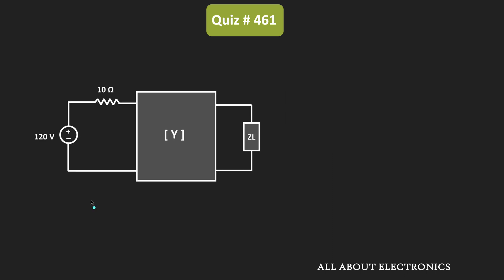We know that maximum power will get transferred to the load when the value of the load is the same as the Thevenin's equivalent impedance — in other words, when ZL equals ZTH. So first, let us review the input and output parameters for the given two-port network.